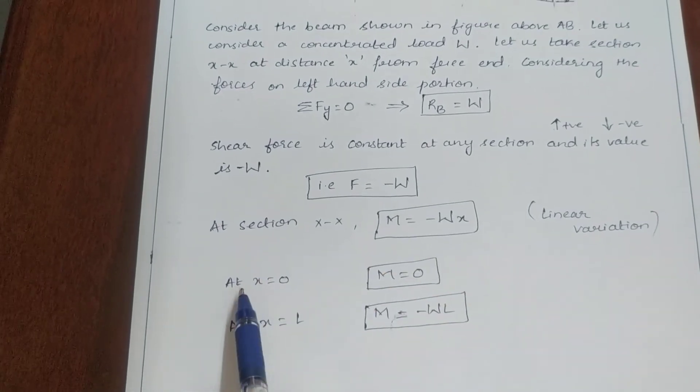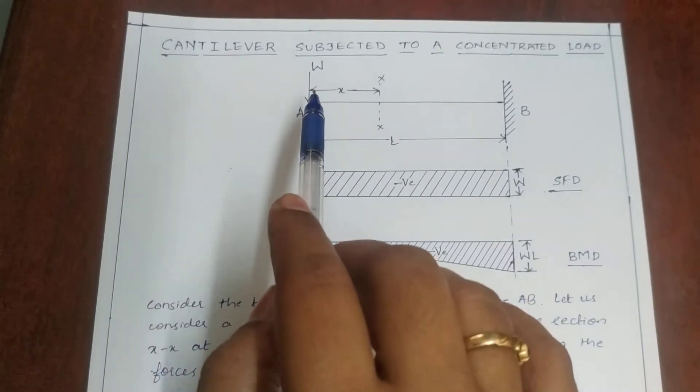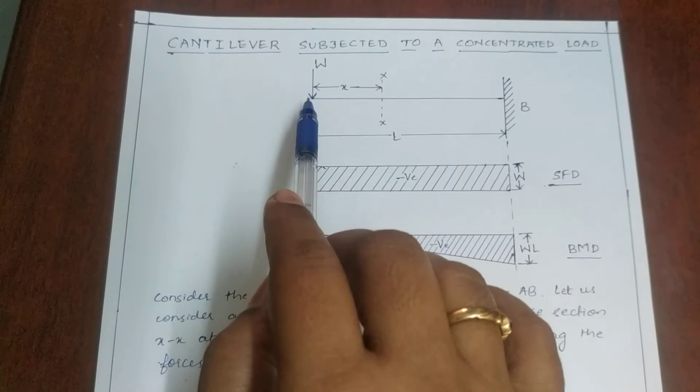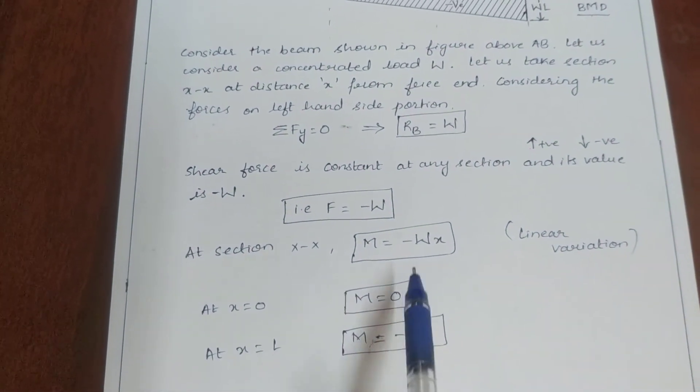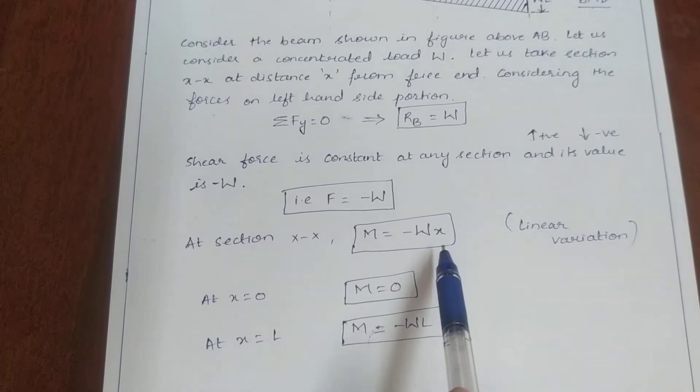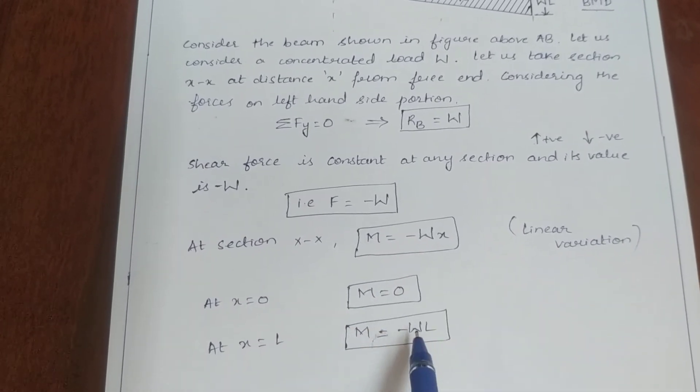Now let us substitute: at X equals zero, that means at A, at point A that is the free end, X equals zero, then bending moment is zero. If we substitute X equals L, we will get minus WL.